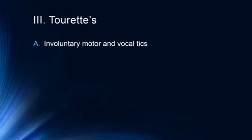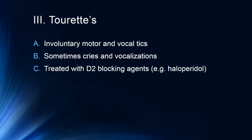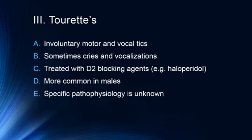Tourette's syndrome is characterized by involuntary motor and vocal tics, sometimes cries and vocalizations. In general, this is not the Hollywood version — people don't tend to just swear out loud, but rather have outcries and involuntary vocalizations. Tourette's is treated with dopamine-2 blocking agents such as haloperidol, is much more common in males, and its specific pathophysiology is relatively unknown. It can be very difficult to live with, particularly at work or school, since these tics are completely out of the person's control.